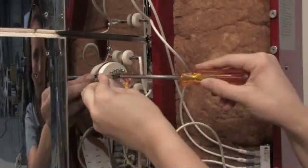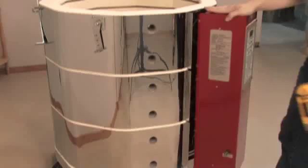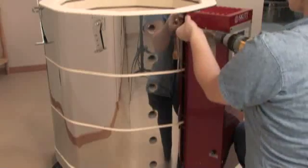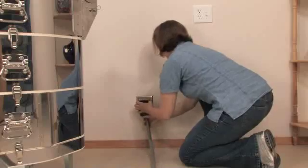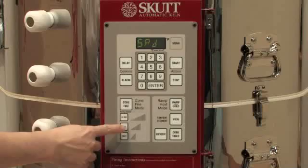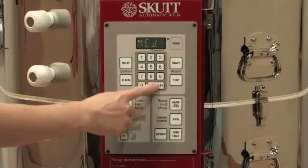Slide the thermocouple back into the kiln and reattach the block. Close the box and reattach the screws. Plug the kiln back into the wall and then perform a test fire to make sure the kiln is operating correctly.